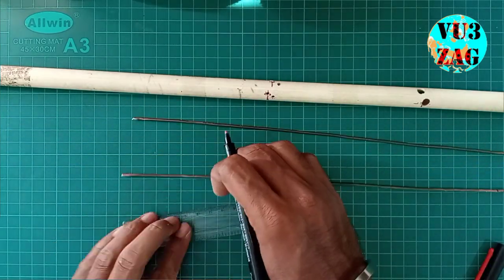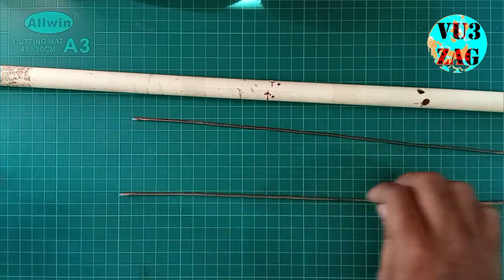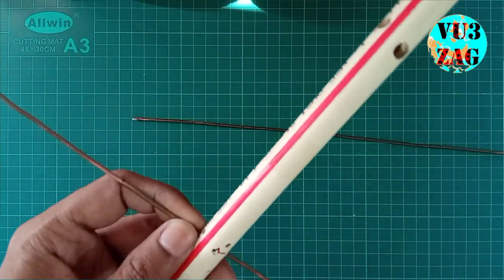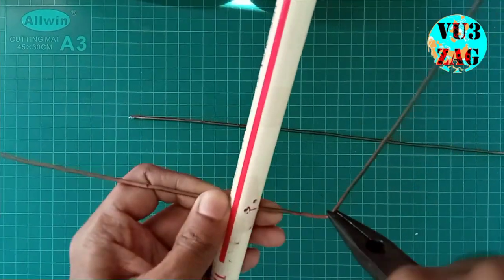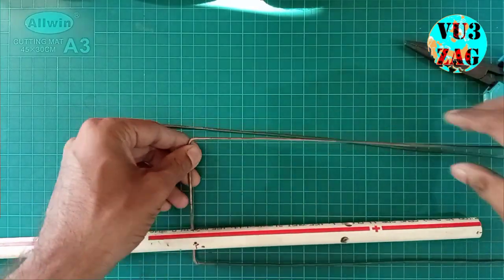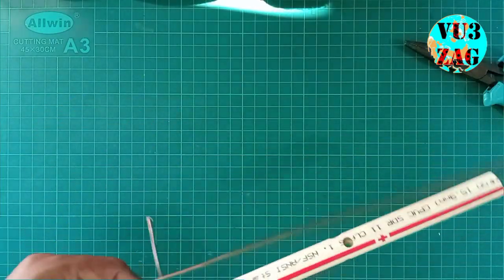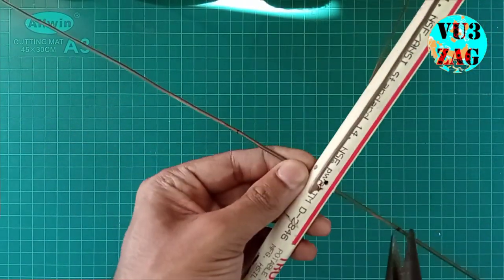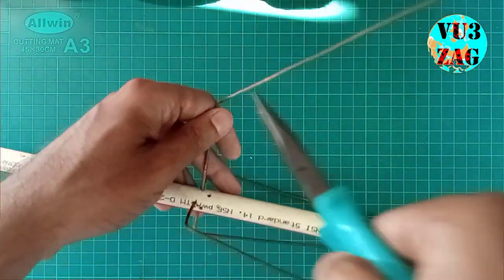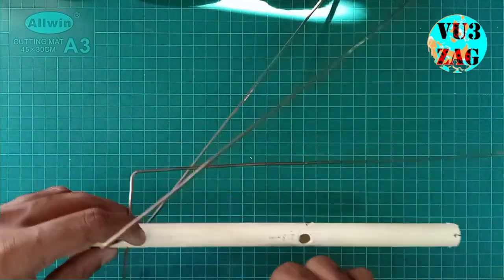Now insert the copper rod through the PVC pipe holes and bend it accordingly as per the markings we have already made. Repeat the same for both loops and fix it in the holes to give it a quadrifilar helix shape.